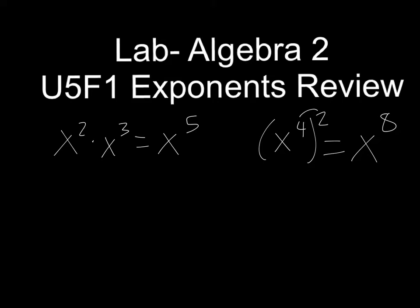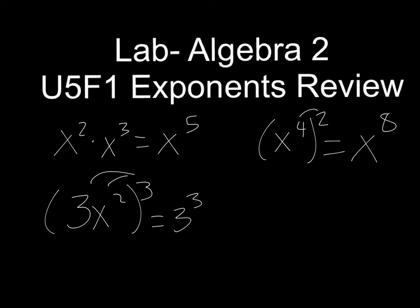If you have the quantity 3x squared to the third, for instance, you have to take that 3 and apply the exponent to everything inside. So this would be 3 to the third times x to the sixth. When you have a number you have to actually calculate that — 3 to the third means 3 times 3 times 3, which is 27x to the sixth.